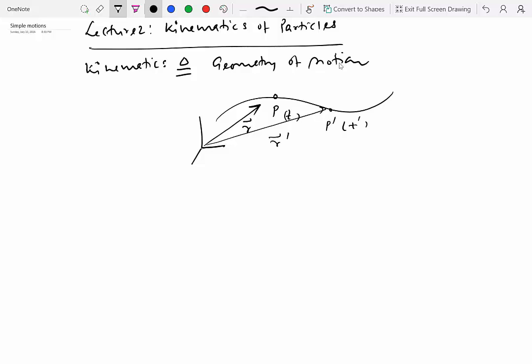Going from position p to p prime, there is a change in position vector and that gives rise to the velocity, and that in turn could give rise to acceleration. So in this chapter we are only concerned with quantities such as position, the change in position which we define as displacement, the velocity at a certain instant, as well as acceleration.